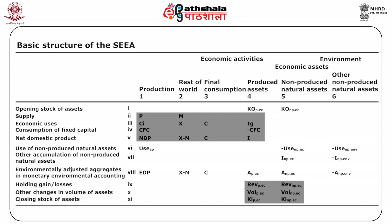The entries in column 4 show the consumption of fixed capital as a negative item; when deducted from gross investment IG, we obtain net investment I. Row 5 gives the national accounts identity: NDP equals exports minus imports plus consumption plus investment. Rows 9 and 10 include various changes that affect the stock of produced and non-produced assets, such as adjustments for changes in asset prices and destruction of assets due to natural disaster.